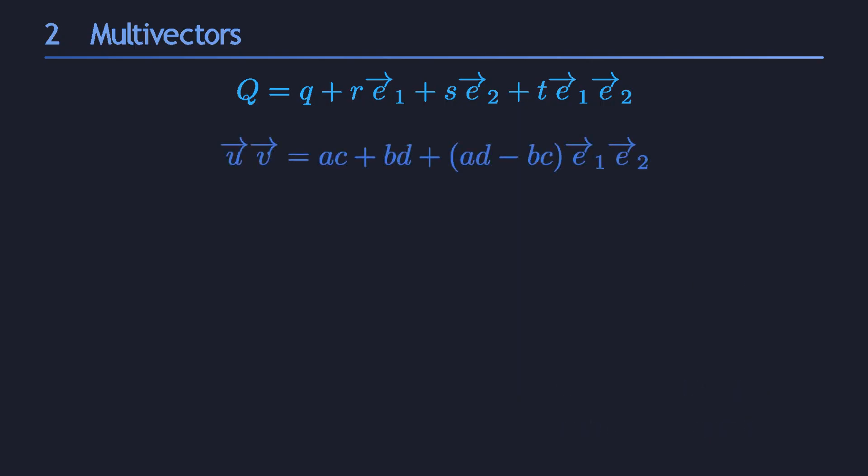Now have another look at the formula for the geometric product. We derived it in the previous video. As you can see, its real part is the dot product of the vectors u and v. So that's the first coefficient in the multivector. The two vector parts are both zero. That's because the geometric product of two vectors doesn't actually contain any vector parts, which is quite interesting. Finally, the bivector part is this coefficient. So when we multiply two vectors, two blades of grade 1, we get a sum of two blades that have grade 0 and grade 2.